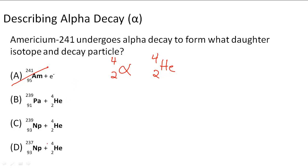Now we need to understand what's going to happen to the isotope. So it's going to lose a mass number of four and it's also going to lose two protons.